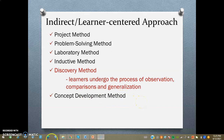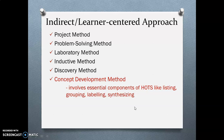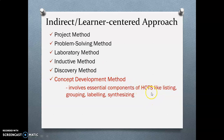The next method under the indirect learner-centered approach is the concept development method. It involves Benjamin Bloom's taxonomy — KKAS: knowledge, comprehension, application, analysis, synthesis, and evaluation — and focuses on HOTS or higher-order thinking skills. This helps students develop their concepts through skills like listing, grouping, labeling, and synthesizing, because a student wouldn't be able to think of things belonging to a certain category if they don't understand the concept well.